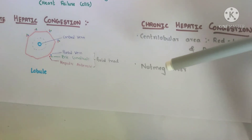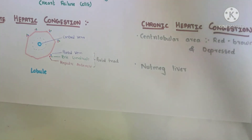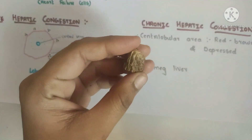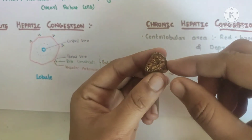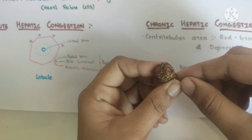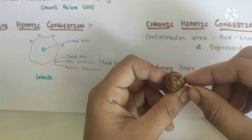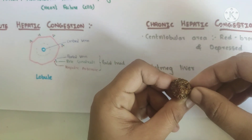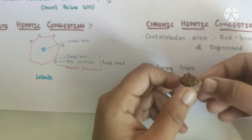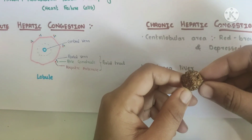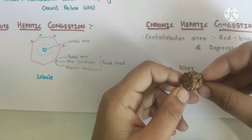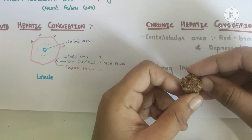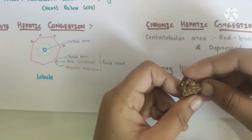Nutmeg is also known as chaifal in Hindi. I have a nutmeg here to show you the appearance — can you observe the light-dark alternating pattern? The same appearance will be seen in the liver slide. The dark part corresponds to the centrilobular area, which shows deposition of hemolyzed RBCs and necrotic cells, whereas the peripheral cells are uncongested and appear as the light part.